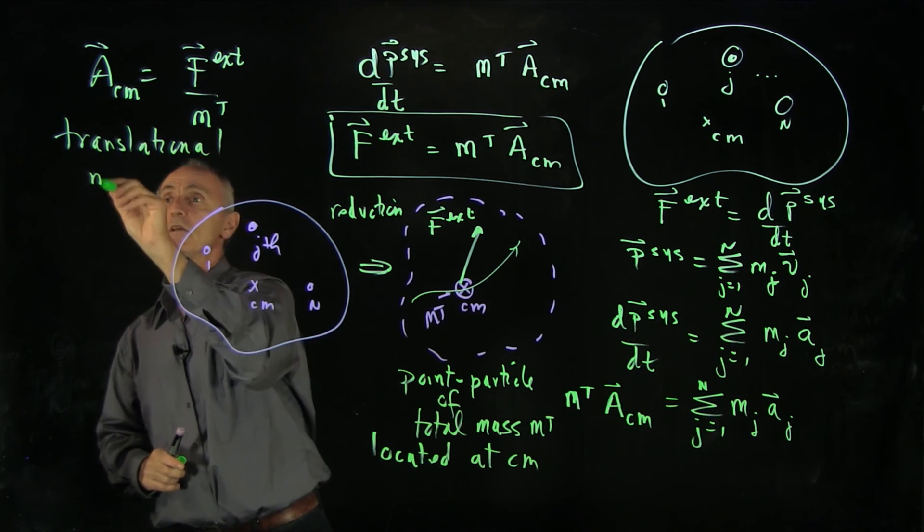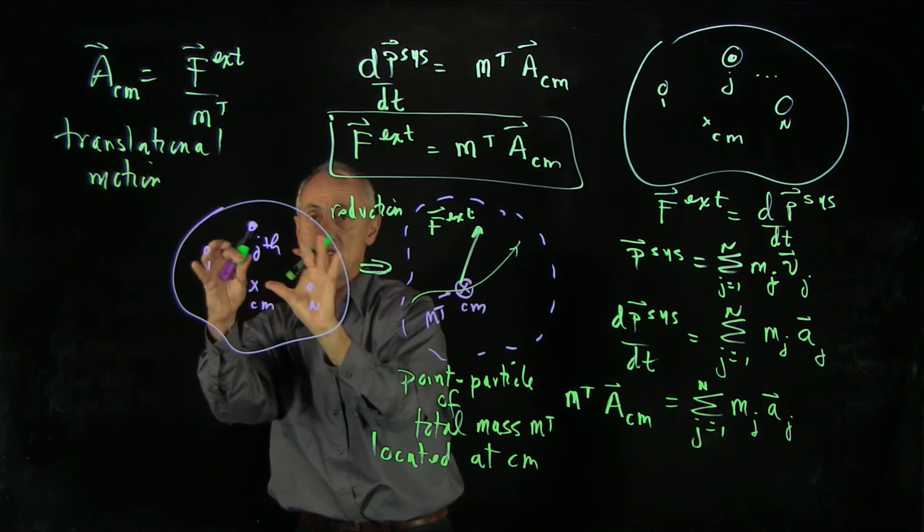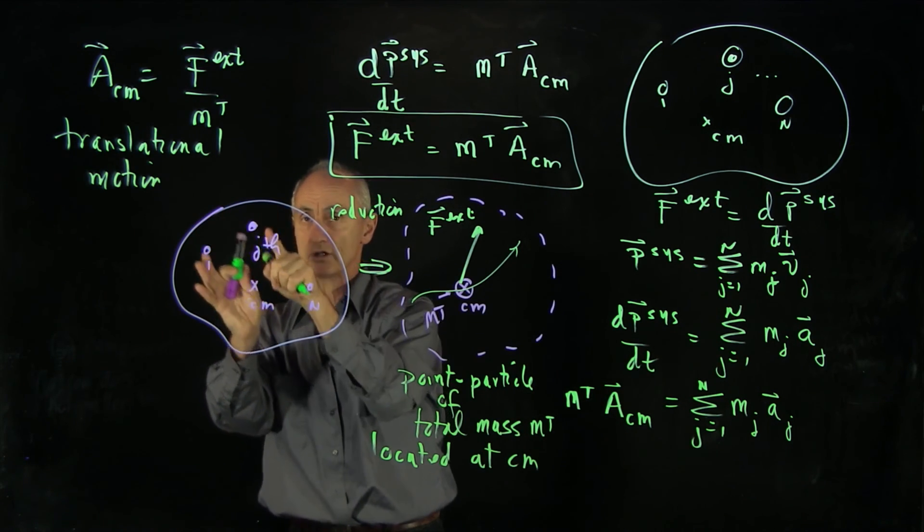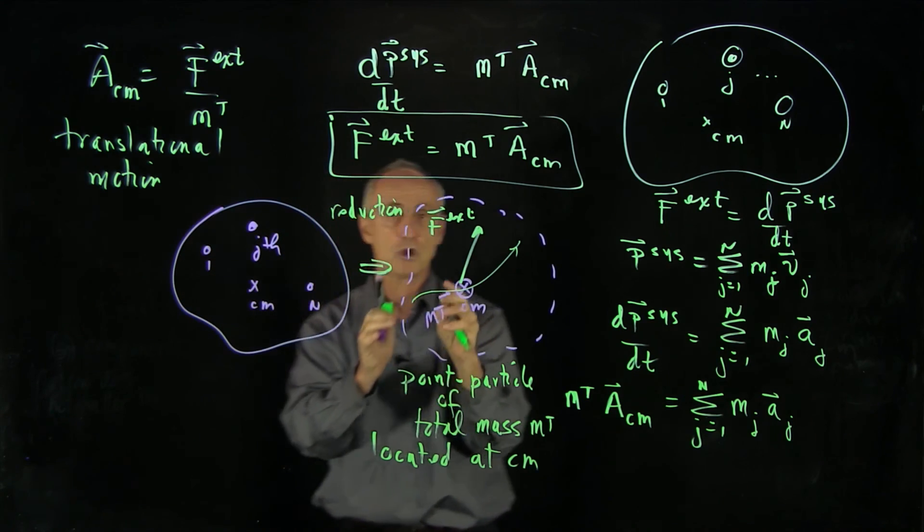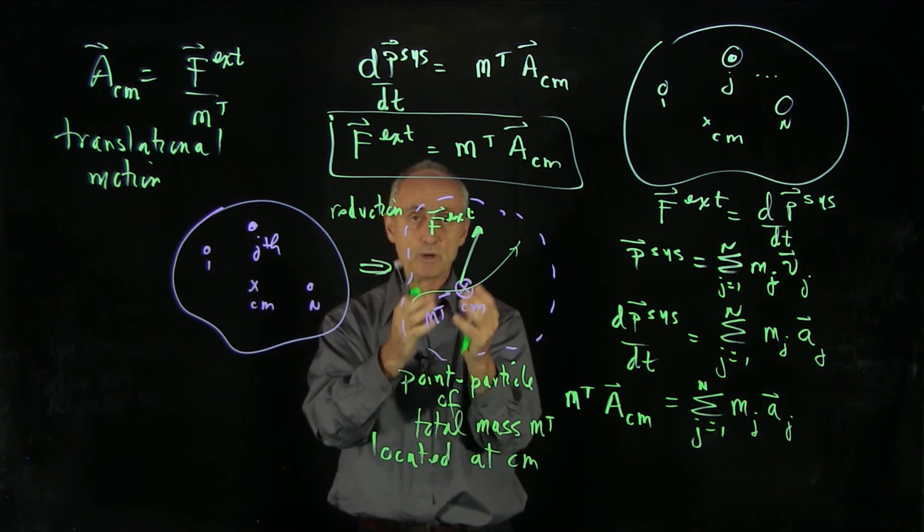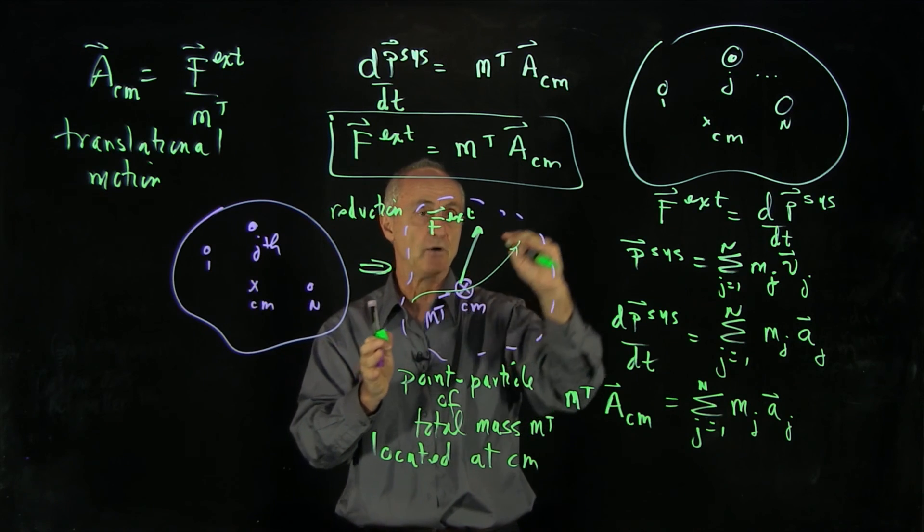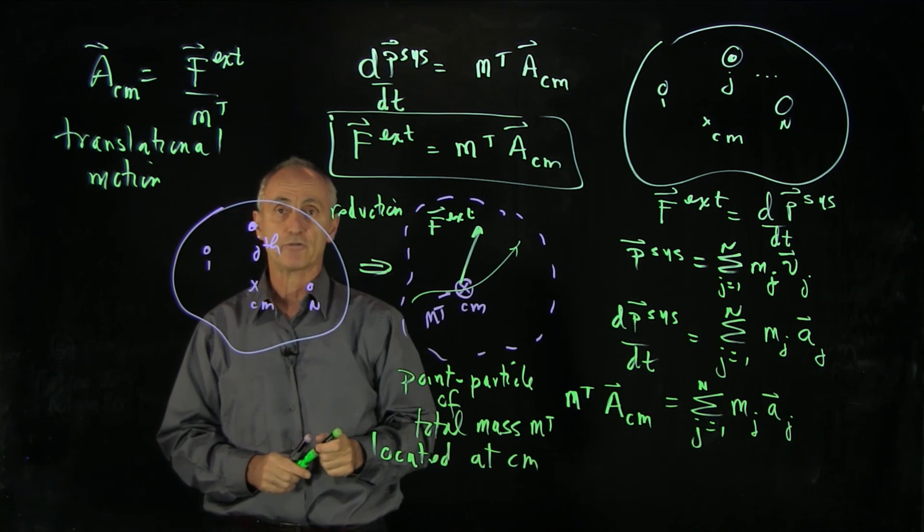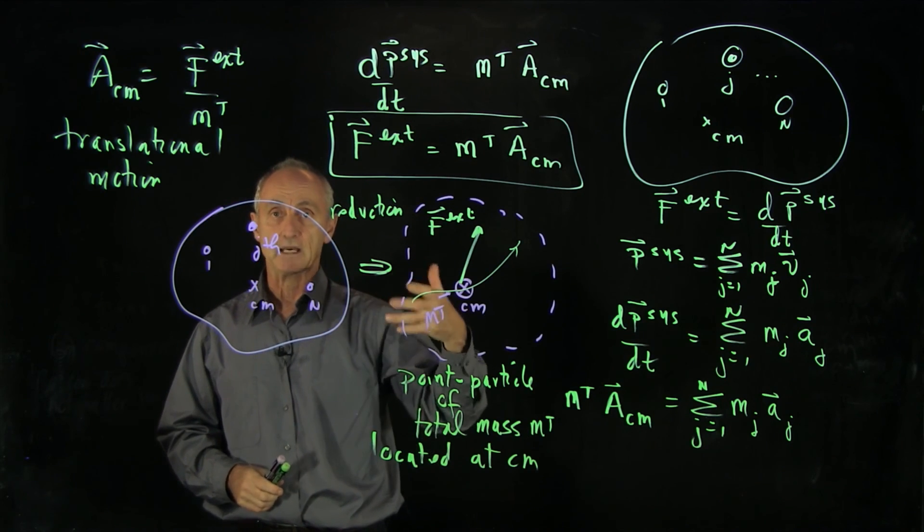Now, we still cannot describe the individual interactions in the system, but we're not trying to do that anymore. We're not trying to trace how each particle moves. We're just looking at our system as a point particle and talking about how that point-like object is translating in space. And this is a powerful tool that we use again and again and again.